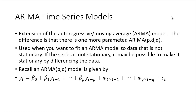The ARIMA model has an extra parameter D, which has to do with differencing the data — we do that if the data is not stationary. The ARMA(P,Q) model is given by a constant beta 0, then some coefficient times Y lagged one period, Y lagged two periods, all the way out to Y lagged P periods, and then a coefficient phi one times the error term lagged one period, lagged two periods, out to Q periods, plus the current period error term.